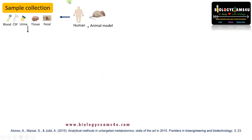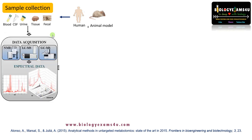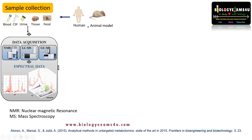Now let us see how metabolomics works. First, we collect a sample either from humans or animal models — from blood, urine, tissue, or fecal matter. Then we need to identify and quantify the metabolites or small molecules within the sample, using either NMR (nuclear magnetic resonance spectroscopy) or MS (mass spectroscopy). We use either liquid chromatography-mass spectroscopy (LC-MS) or gas chromatography-mass spectroscopy (GC-MS) for identification and quantification of these metabolites.